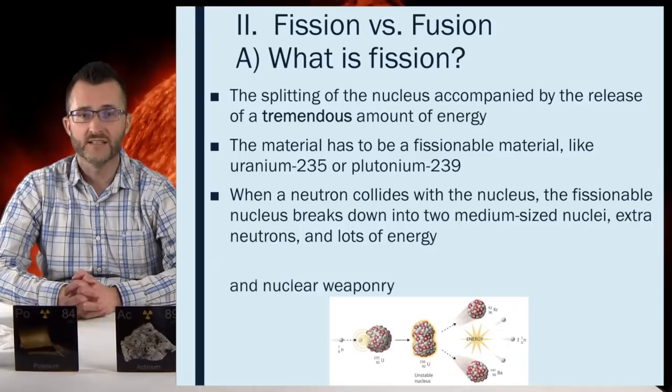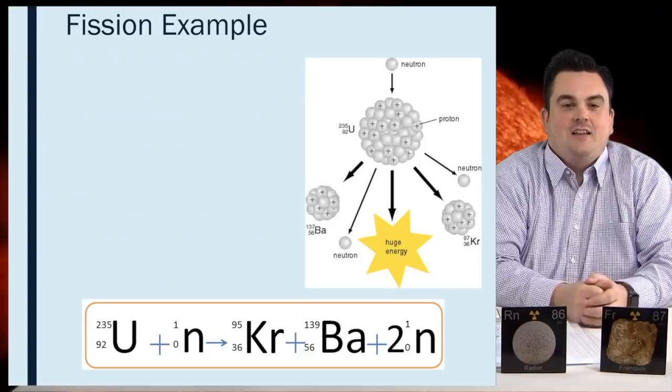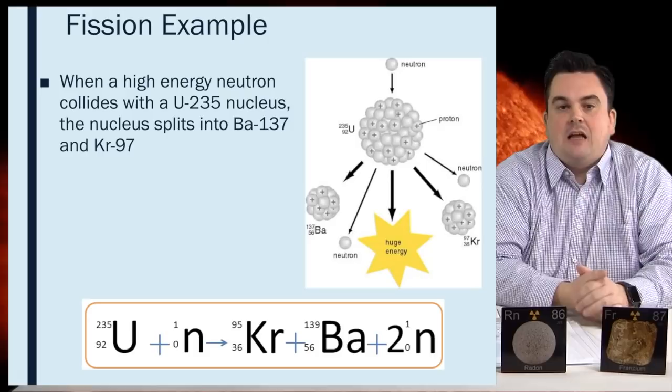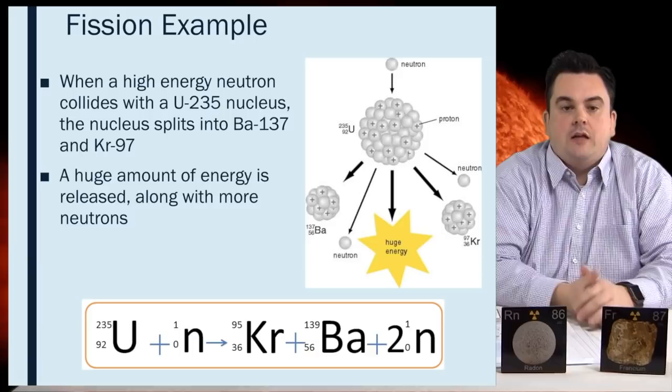Fission example. When a high energy neutron collides with a uranium-235 nucleus, the nucleus splits into barium-137 and krypton-97. A huge amount of energy is released along with more neutrons. These neutrons can go on to create more fission reactions. See the equation below.